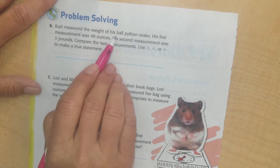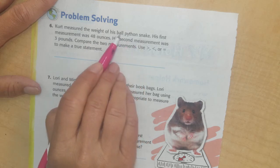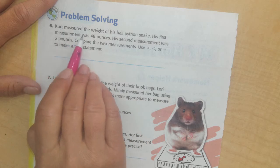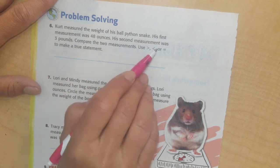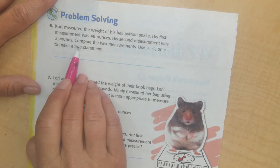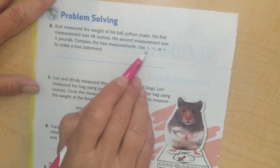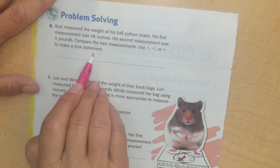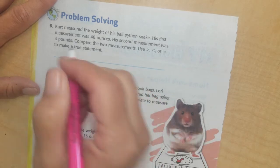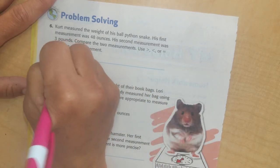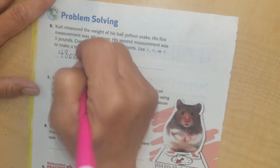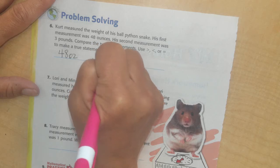Here's Kurt. Kurt measured the weight of a ball python snake. I don't know if you've heard of a python, it's kind of a snake. His first measurement was 48 ounces. His second measurement was 3 pounds. Compare the two measurements. Use less, greater than, less than, or equal to to make a true statement. So I'm going to do 48 and I'm going to put ounces, and I'll leave a space and 3, and I'm going to write pounds.